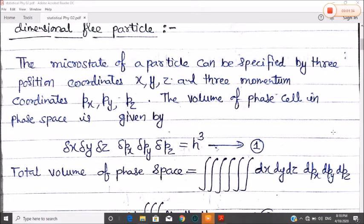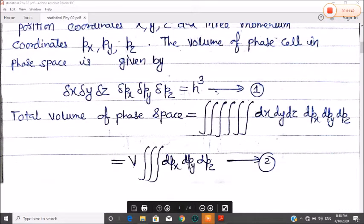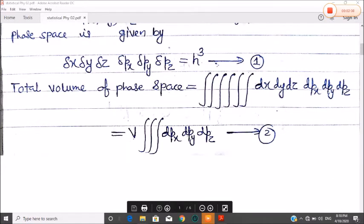We have equation number one. Now assume the total volume of the phase space is a six-fold integration. We know that dx dy dz is three-dimensional. So this is the total volume of the phase space.